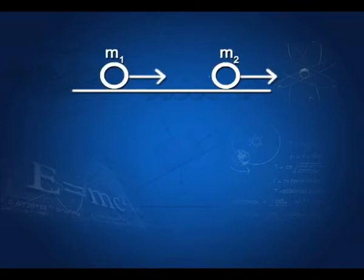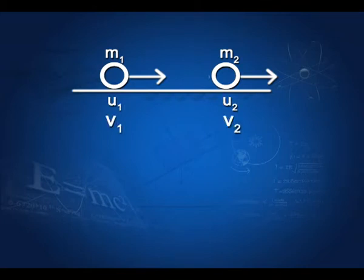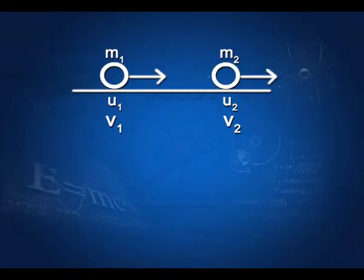Before we consider special cases, let us consider what we were doing in our previous lesson. We had a smooth horizontal surface and two spherical bodies — one with mass m1, the other with mass m2. They were both moving in the same direction with initial velocities u1 and u2, and they finally acquired velocities v1 and v2. From equations 7 and 8, these velocities could be found in terms of u1, u2, m1, and m2.